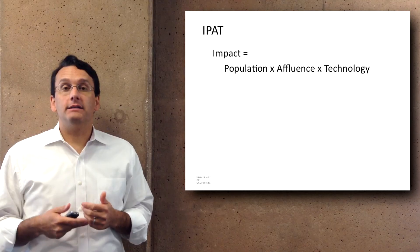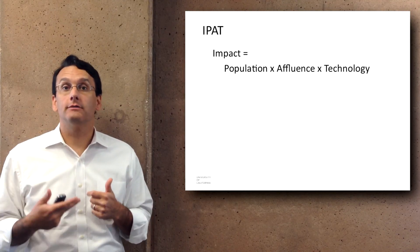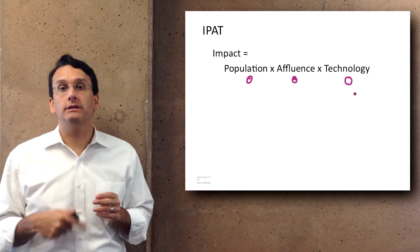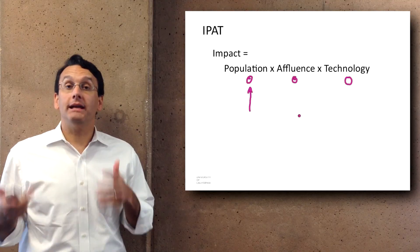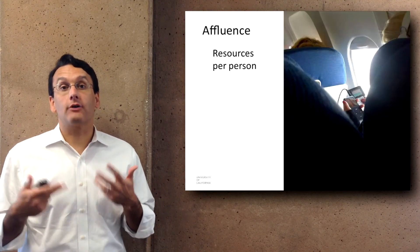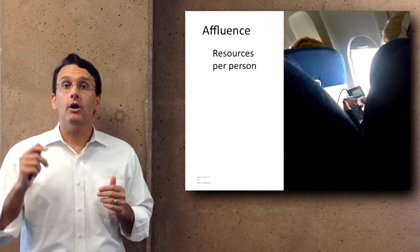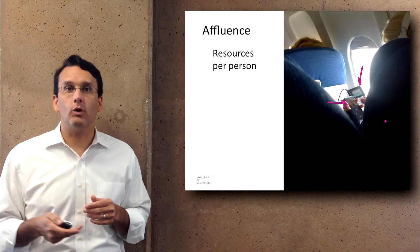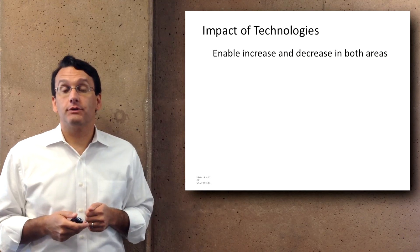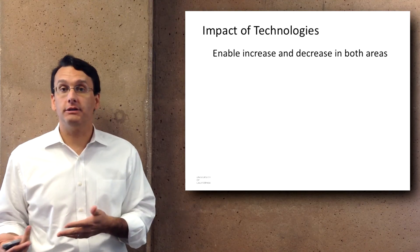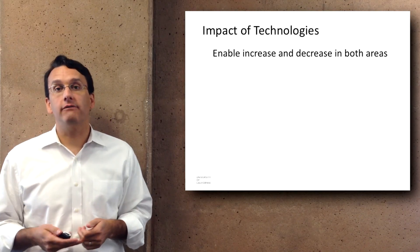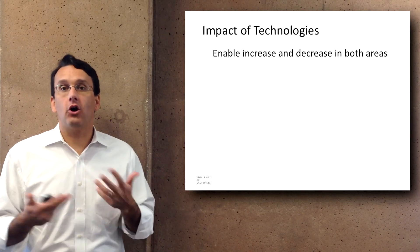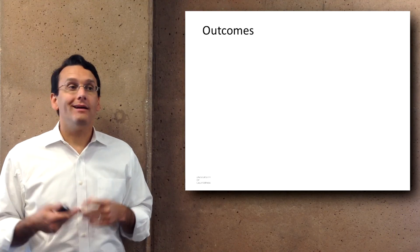This connects to the IPAT equation, a central part of how some groups think about sustainability: the Impact of a community equals Population times Affluence times Technology. Population — there are seven billion people. Affluence is the amount of resources used per person, illustrated by someone on a plane using two electronic devices simultaneously. Technology can enable increases or decreases in both population and affluence. Together, these factors drive the question of what impact human activity has on the environments we live in.